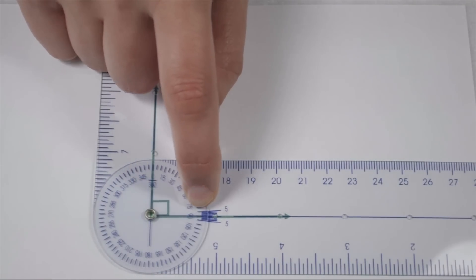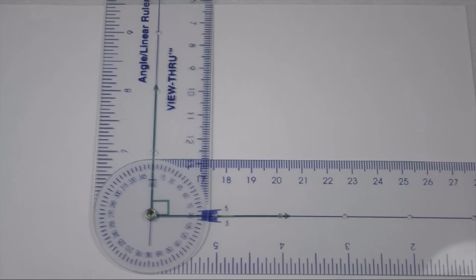We can see, even though it's small, that it crosses at 90 degrees. So we know for sure this is a 90 degree angle.